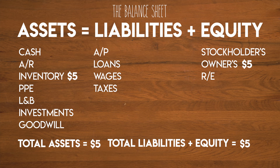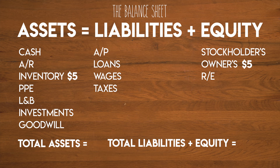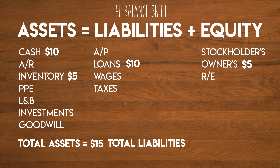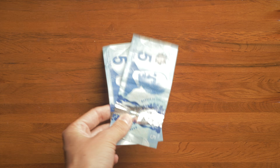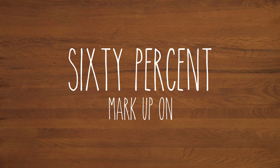Now I need to pot this corn but I don't have enough money to go and buy a pot. So I go to one of my friends and I ask them if I can borrow $10. The business's cash increases by $10 and loans payable go up by $10 as well. Total assets are now $15 and my liabilities plus my equity are now also $15 — we're still in balance.